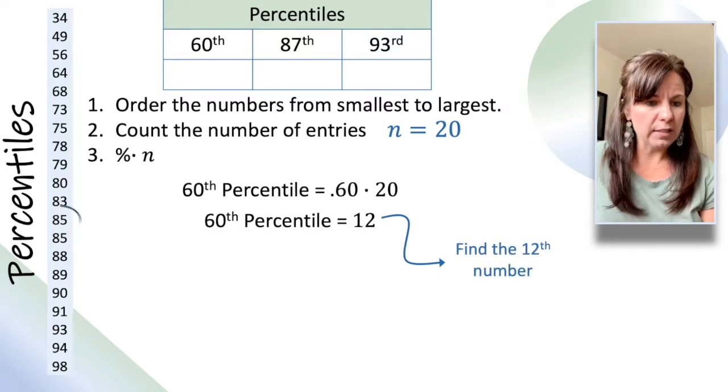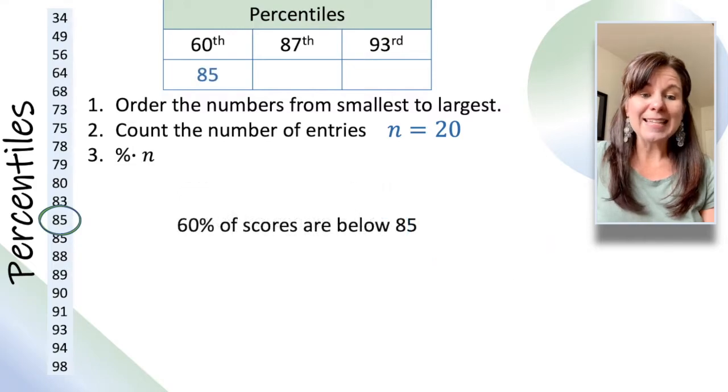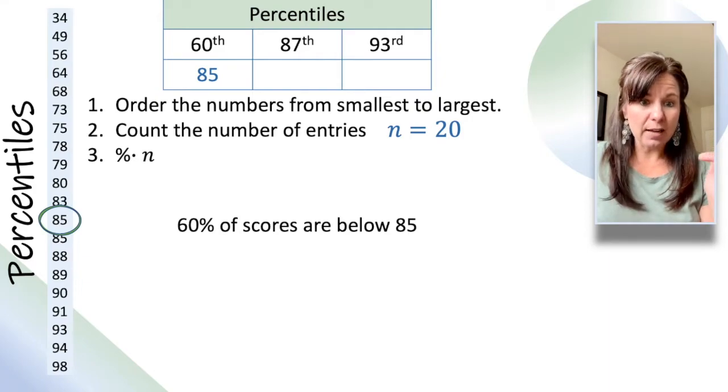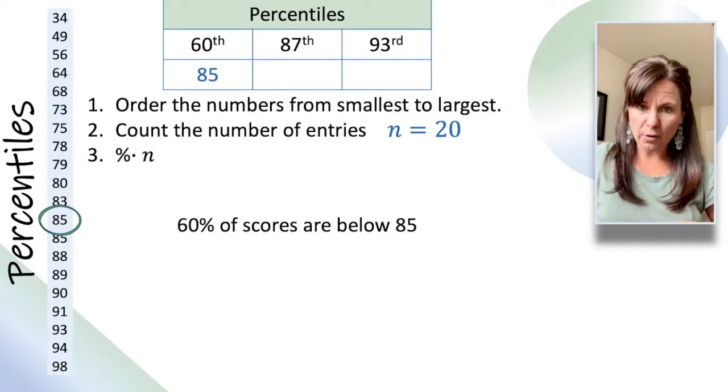In our data set for these test scores, the 12th number is 85, which means that 60% of scores are below 85. If the 60th percentile is 85, that means 60% of scores are below 85.